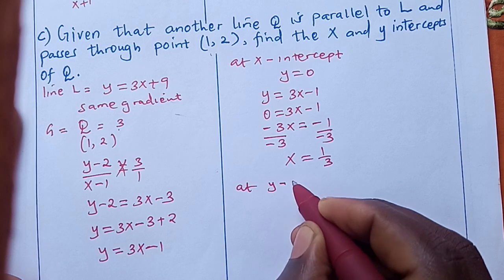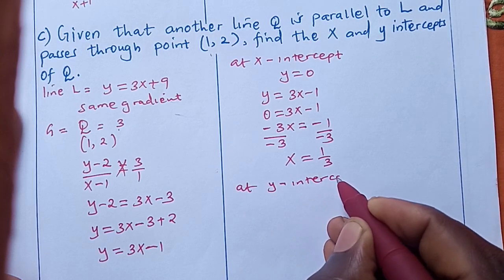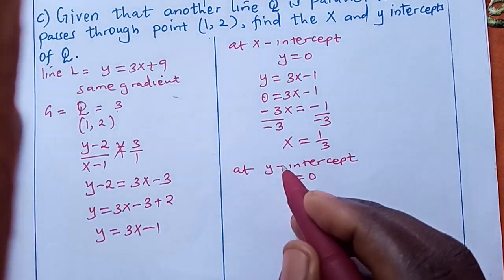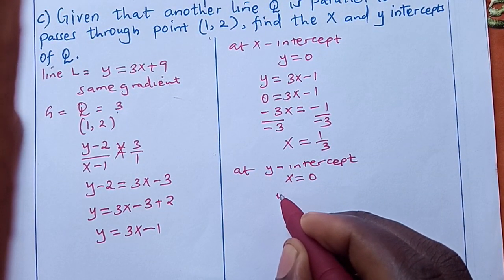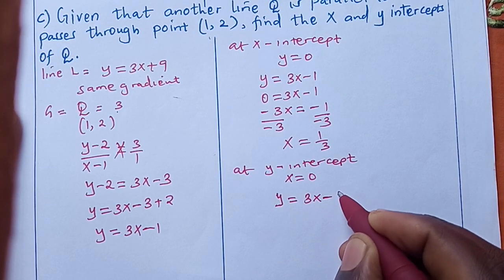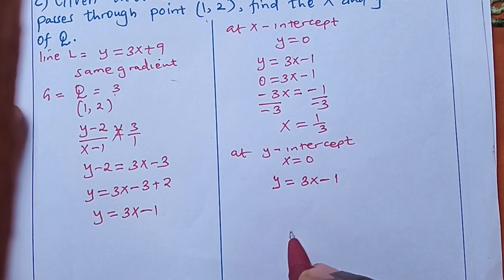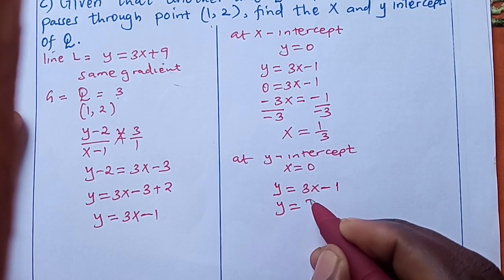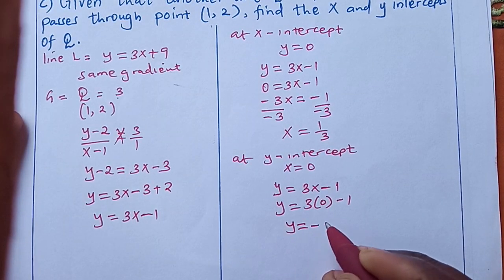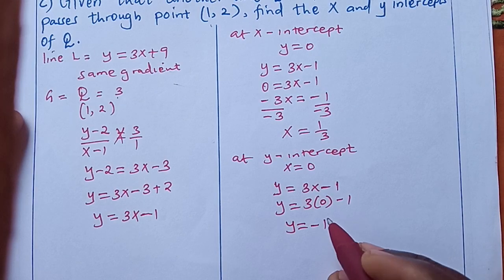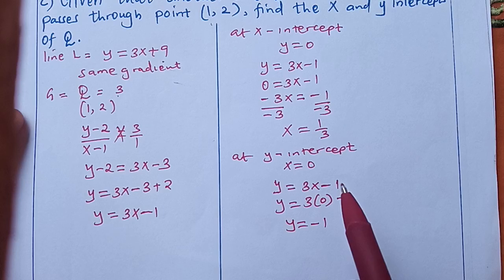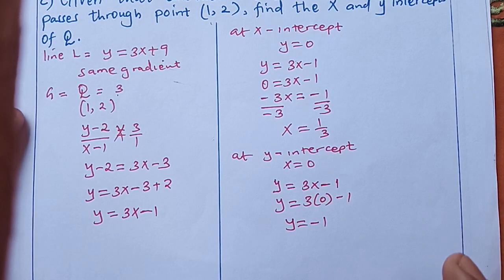At the y-intercept, x = 0. Back to the equation y = 3x - 1, we substitute x = 0: y = 3(0) - 1 = -1. So the y-intercept is -1. The x-intercept is 1/3 and the y-intercept is -1.